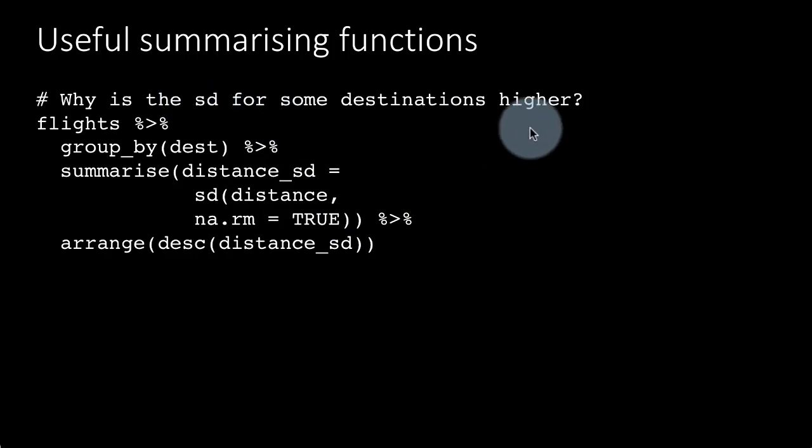Question is why is the SD for some destinations higher? Most likely what happens is that the variability in the distance is likely to be higher if the destination is far away. That is because then there are more opportunities for it to get rerouted. So the variability will be higher, whereas a flight going from let's say Newark to Washington DC there is not that much opportunity for the flight to get rerouted. Again that is because the weather patterns in these two places are likely to be very similar, so there is not likely to be much opportunity to route it because of weather.